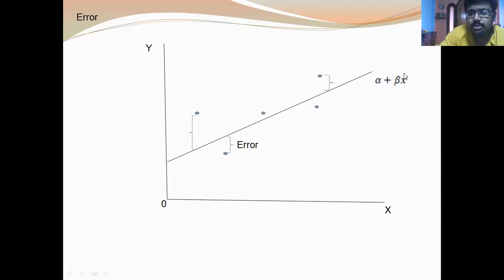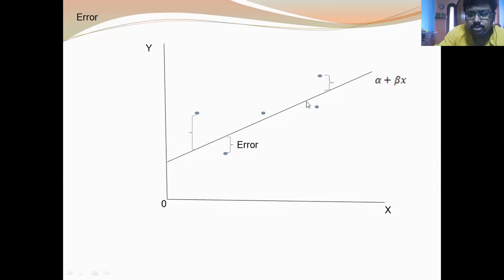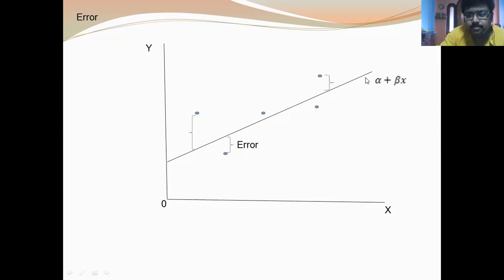only the deterministic term — alpha plus beta X — would show this straight line. If we do not consider the error or disturbance term, only this deterministic term shows this straight line. It has an intercept of alpha and the slope of this line is beta.